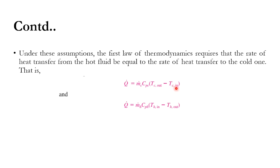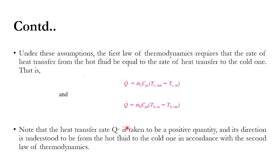For the cold stream: Q = ṁ_c · Cp_c · (T_c,out − T_c,in), where T_c,out is the cold stream outlet temperature and T_c,in is the inlet temperature. For the hot stream: Q = ṁ_h · Cp_h · (T_h,in − T_h,out), since inlet temperature is greater than outlet. This quantity is always positive, and by the second law of thermodynamics heat always flows from the hot fluid to the cold one.